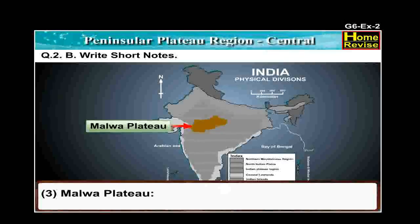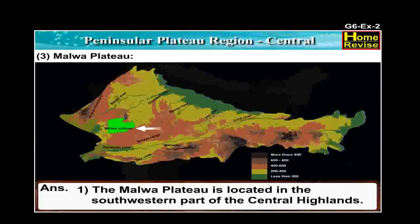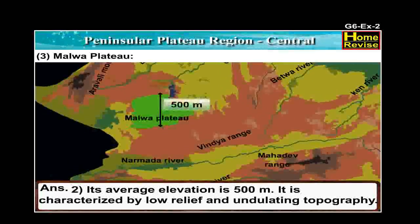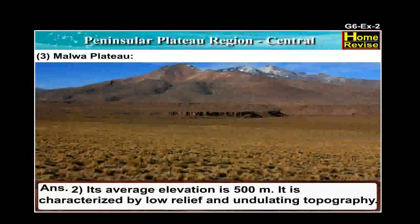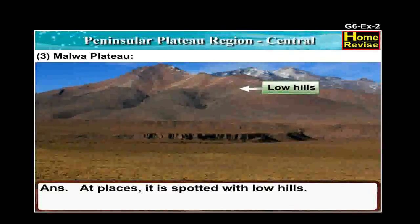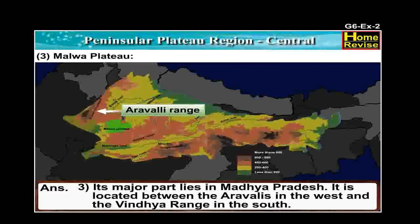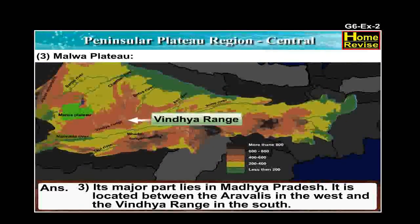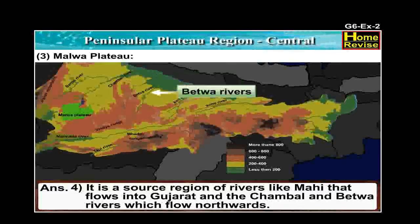Number 3: Malwa Plateau. The answer is: The Malwa Plateau is located in the south-western part of the central highlands. Its average elevation is 500 metres. It is characterised by low relief and undulating topography. At places it is spotted with low hills. Its major part lies in Madhya Pradesh. It is located between the Aravallis in the west and the Vindhya range in the south. It is a source region of rivers like Mahi that flows into Gujarat, and the Chambal and Betwa rivers which flow northwards.